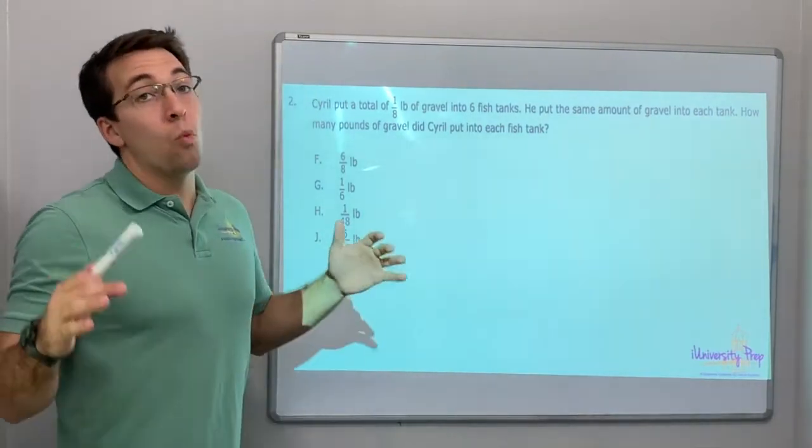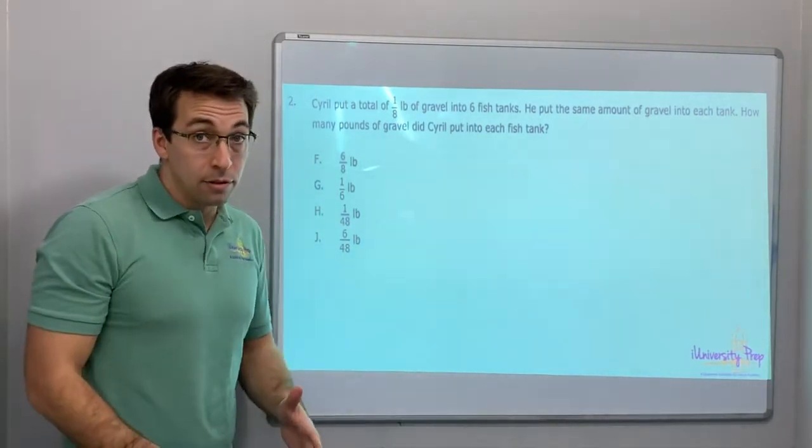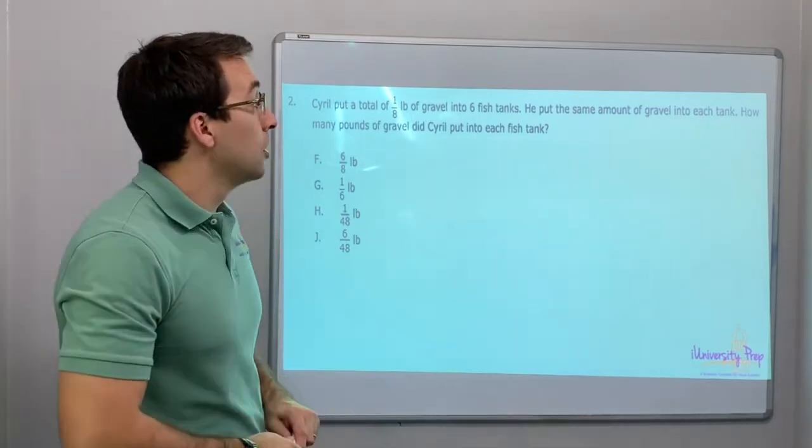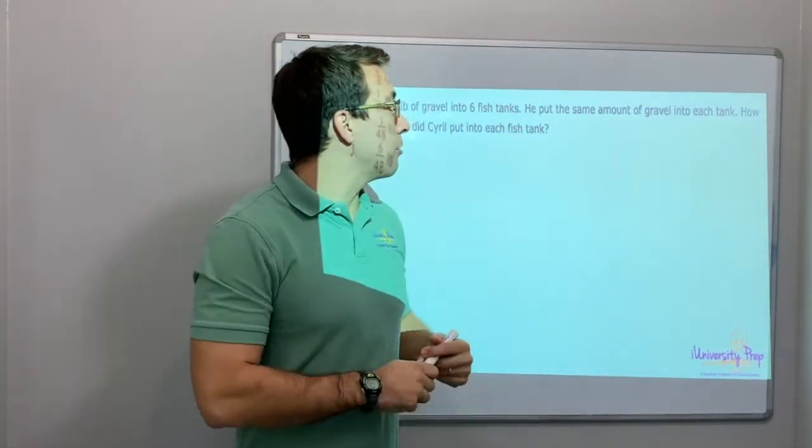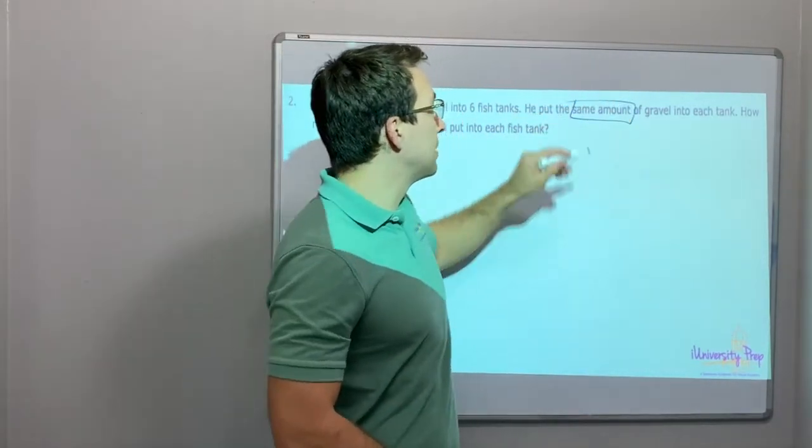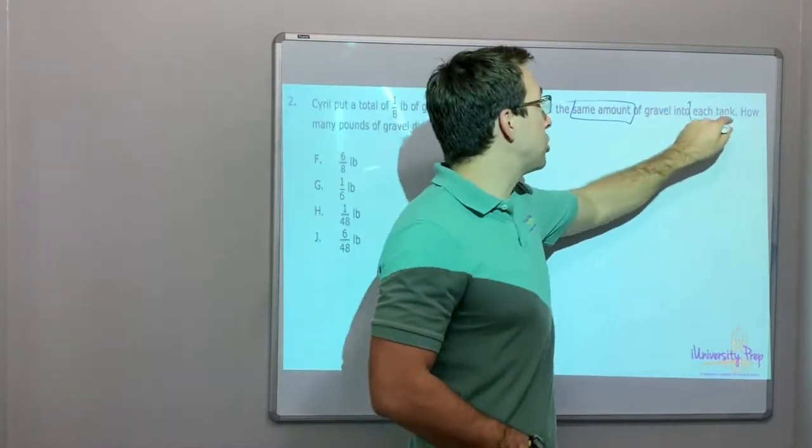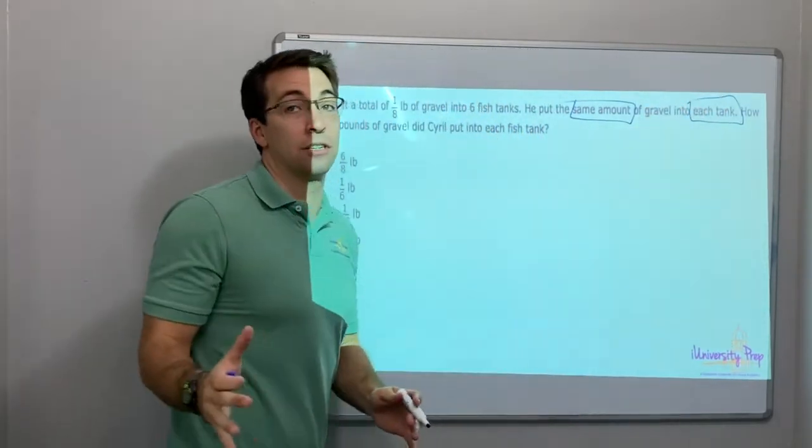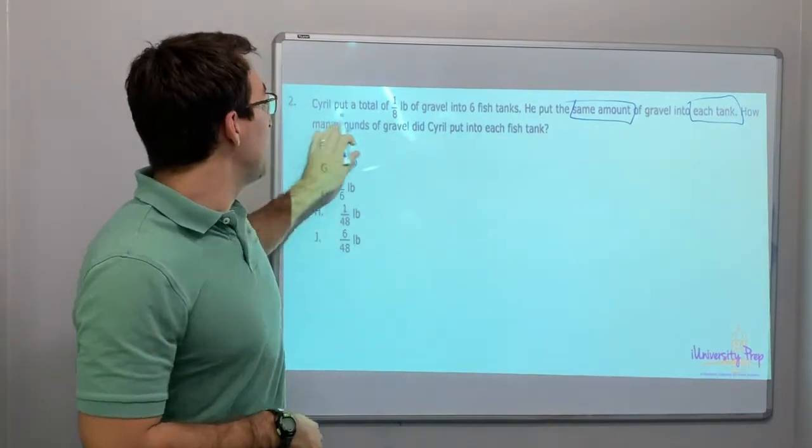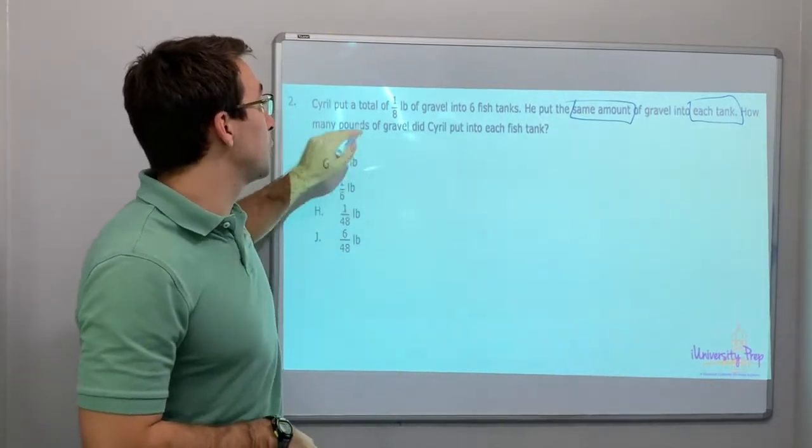Okay. Cyril put a total of one-eighth pound of gravel into six fish tanks. He put the same amount of gravel, look, same amount, division, same amount, into each tank. That's division. That's your vocab to mark division. How many pounds of gravel did Cyril put into each fish tank?